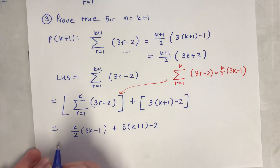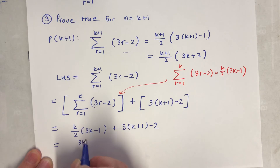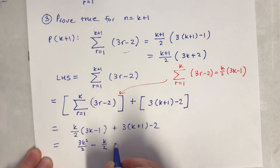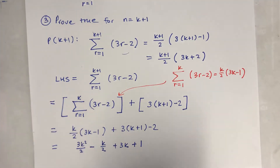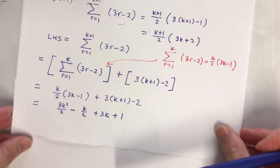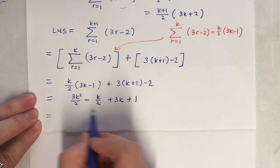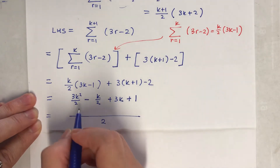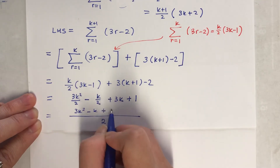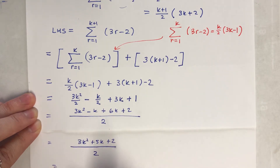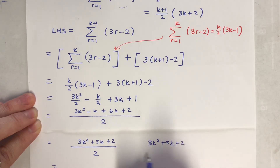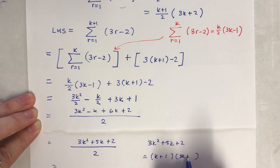Expanding: 3k squared over 2 minus k over 2 plus 3k plus 1. Putting everything over 2: 3k squared minus k plus 6k plus 2, which simplifies to 3k squared plus 5k plus 2. We can factorize this - if you need more time just pause and have a go yourself.